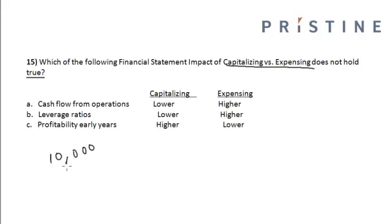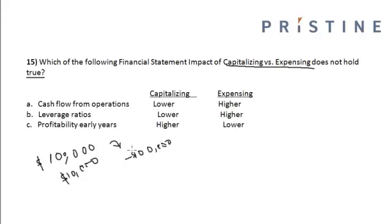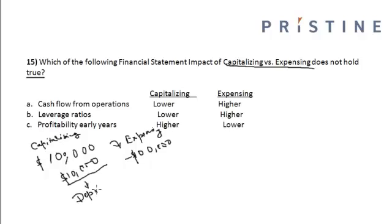Suppose we purchase an asset of one lakh dollars and we depreciate it by an equal amount of 10,000 dollars over the next 10 years. In expensing, my net income will get reduced before tax by one lakh dollars — the entire purchase amount. Under capitalization, only 10,000 will be recognized as an expense, that is, depreciation expense.